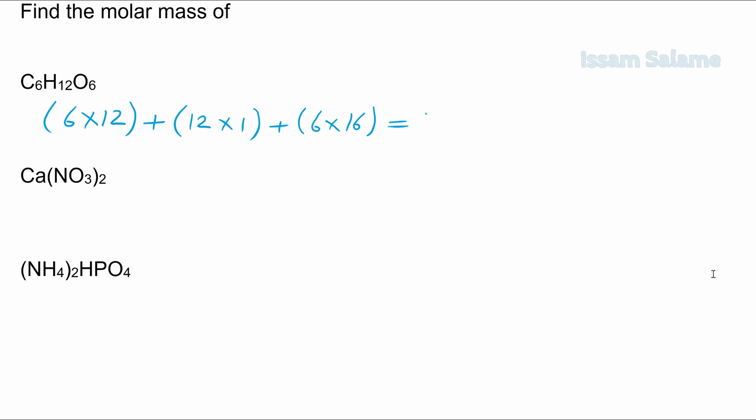Add them all, and the answer is going to be 180 grams per mole. So the unit of the molar mass is always grams per mole.